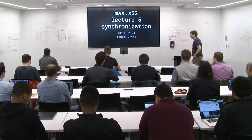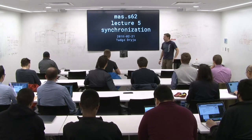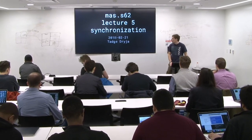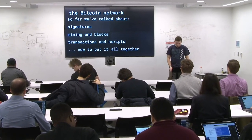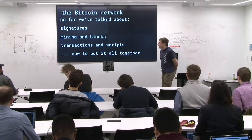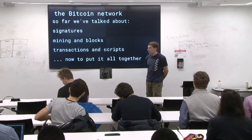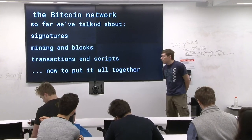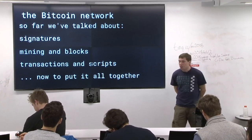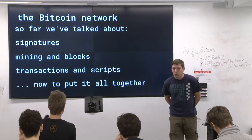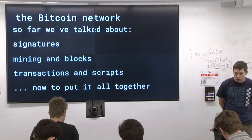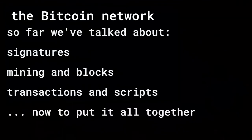Today we're going to talk about synchronization — how all these different nodes on the network come to consensus, how they link up. It's sort of bringing it all together. So far in these lectures, we've talked about signatures, mining and blocks, transactions and scripts. And now we're going to put it all together. How does this all actually work? What do all these components come together to do? And how does this make this cool money?